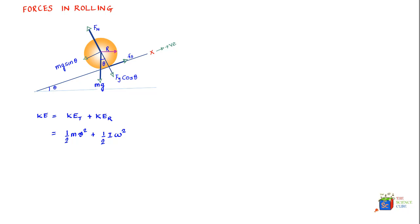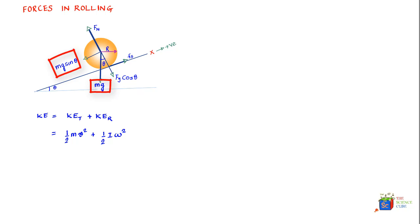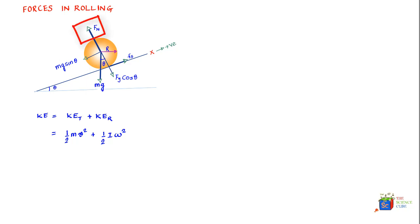Now let's understand the forces acting on a body rolling down a plank — this will give a fantastic understanding of rolling, torque, and forces. The force mg acts in the downward direction and has two components: mg sinθ parallel to the plank, and mg cosθ perpendicular to the plank. The perpendicular component causes a normal reaction, which we call Fn.